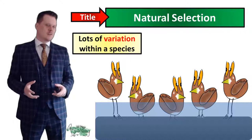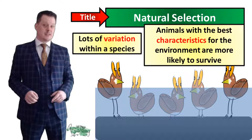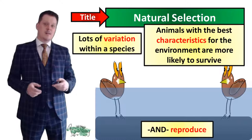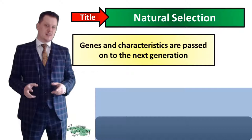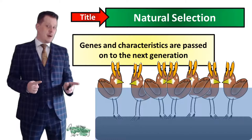Within a species there is lots of variation — lots of differences between each of the individuals. If there is a change in the environment, like if the water level rises, then only the animals with the best characteristics for the environment are likely to survive. Because they're more likely to survive, they are more likely to reproduce, which means those better genes are passed on from one generation to the next. All of the offspring will have the same characteristics — in this case, birds with longer legs.